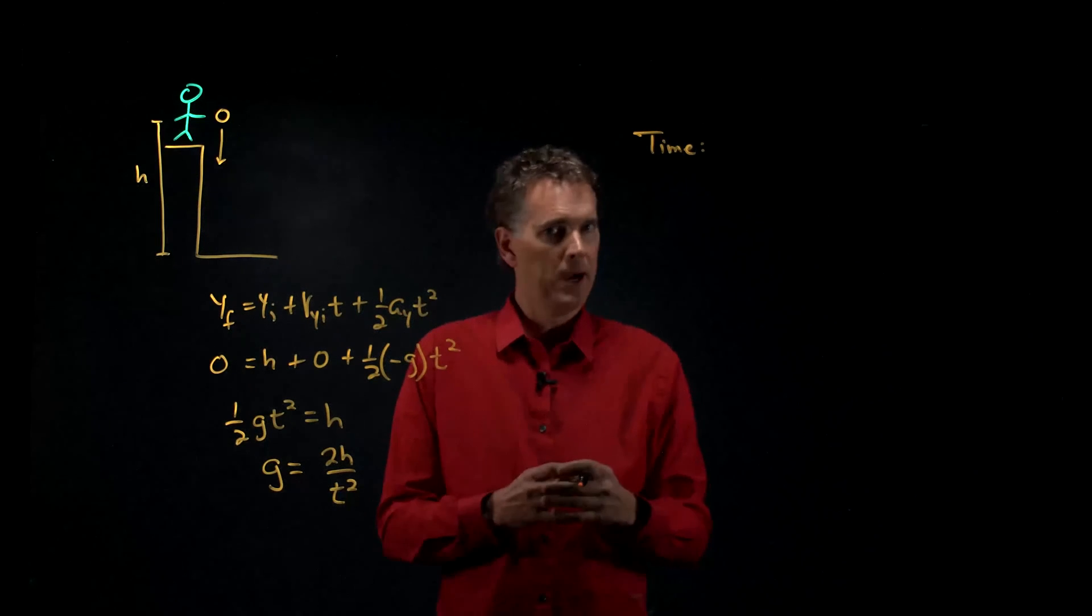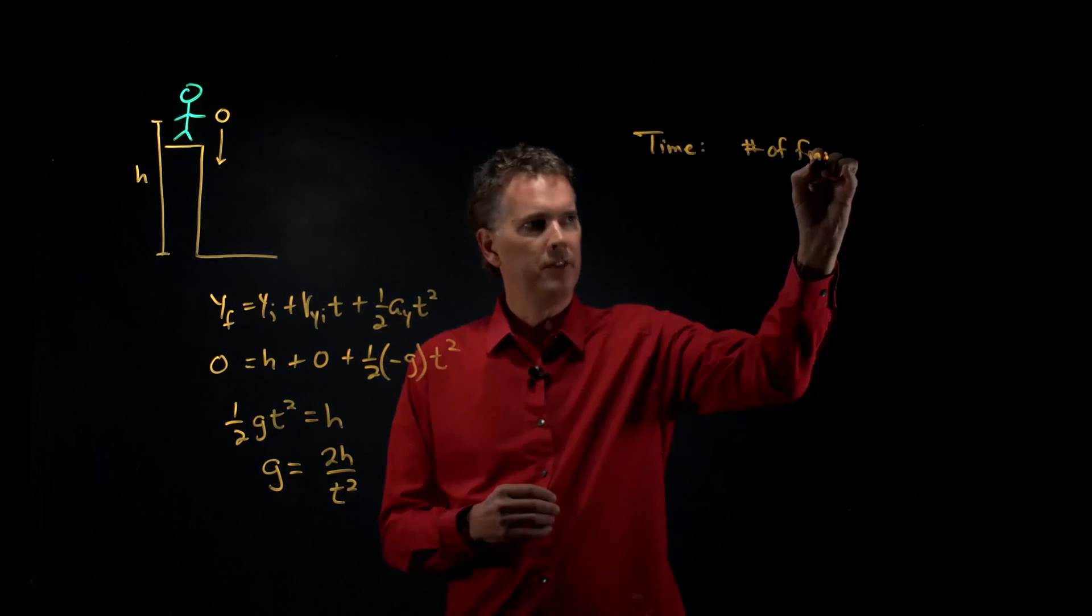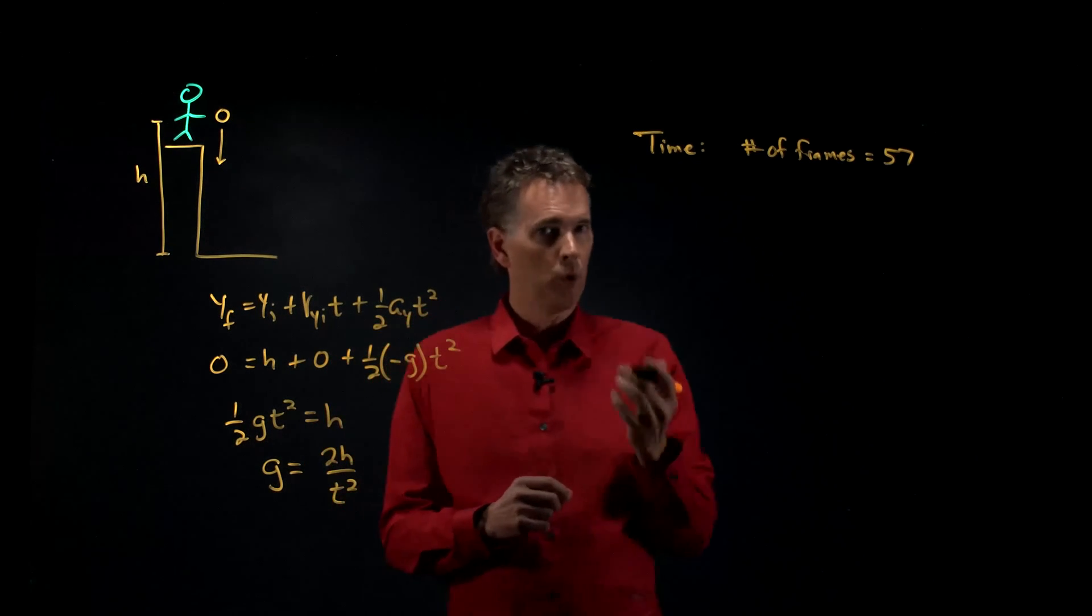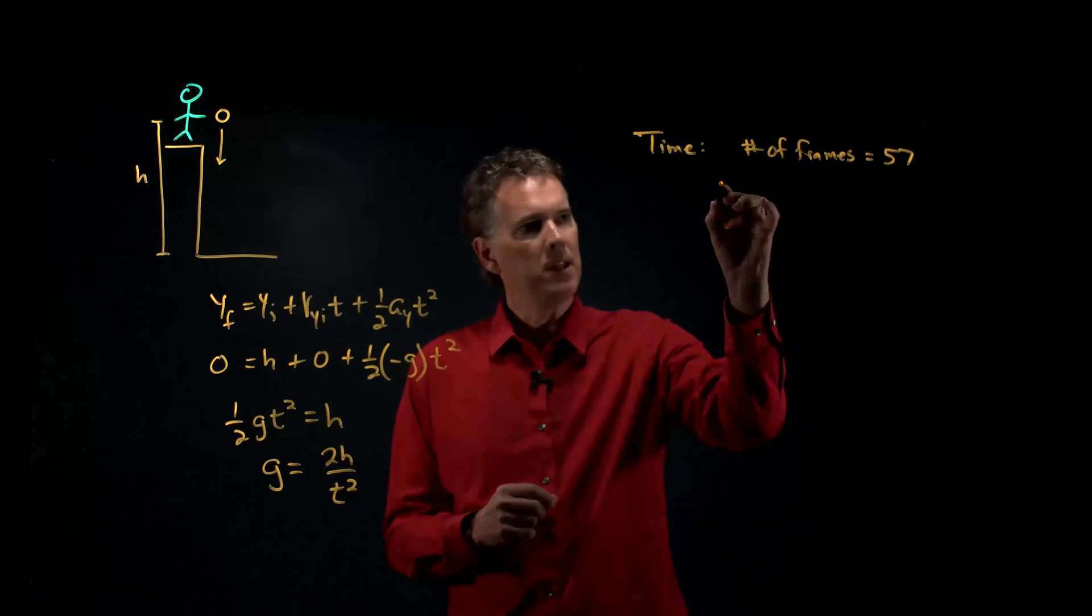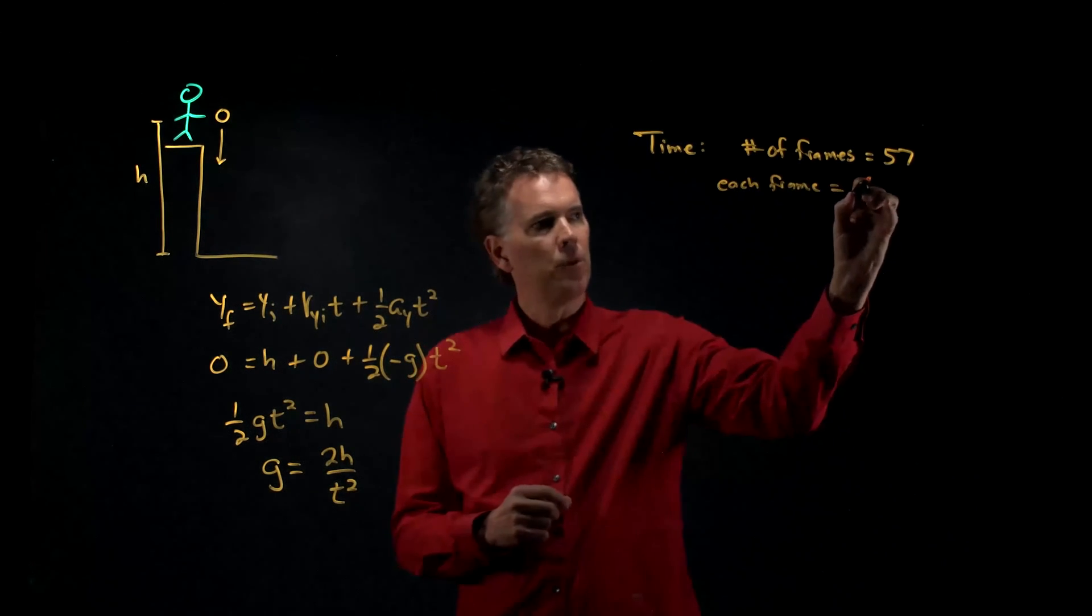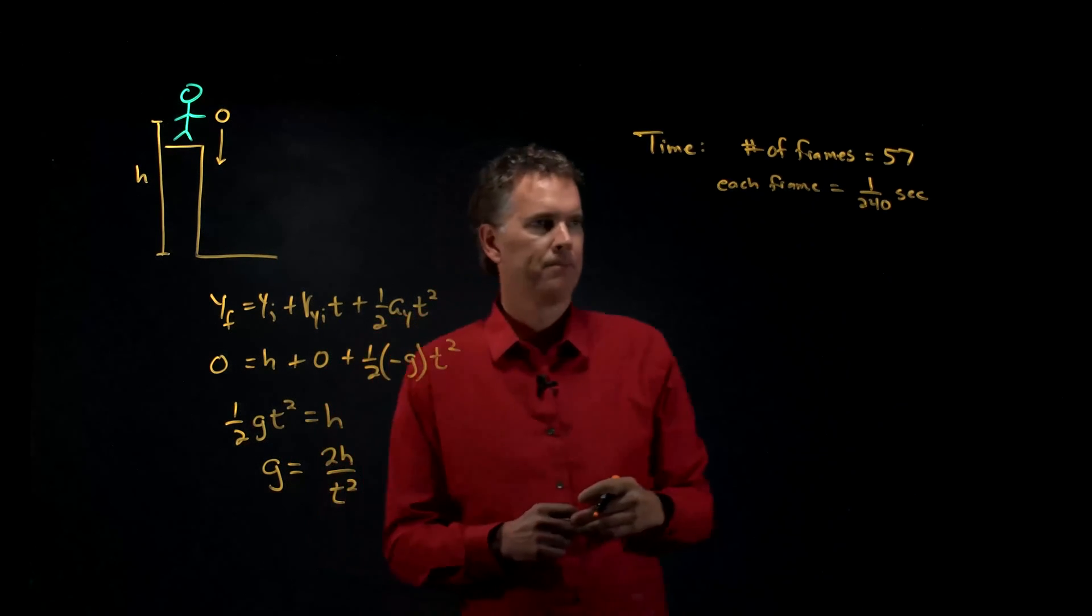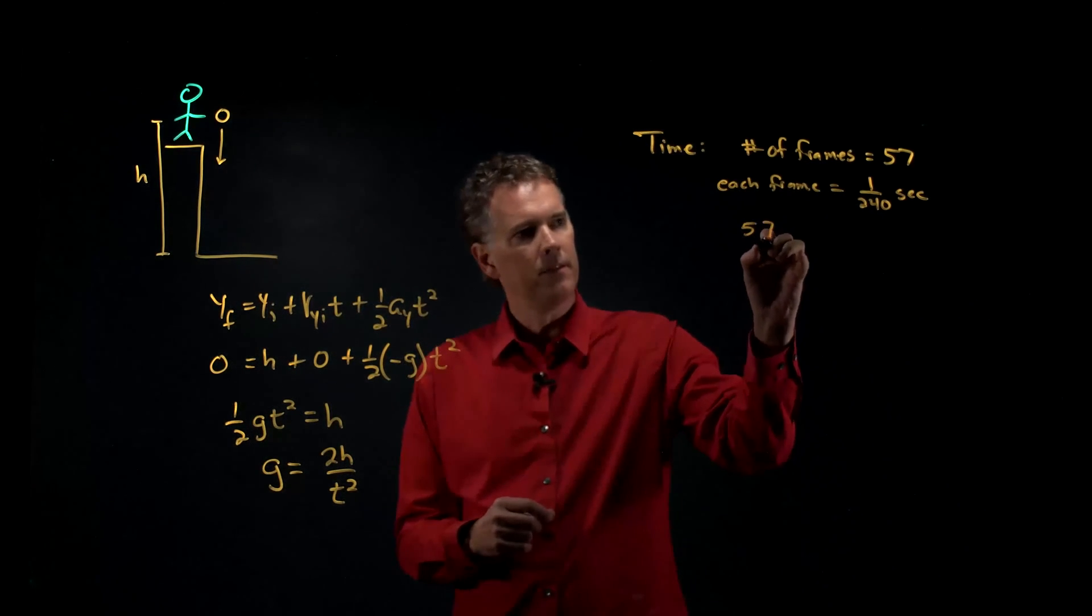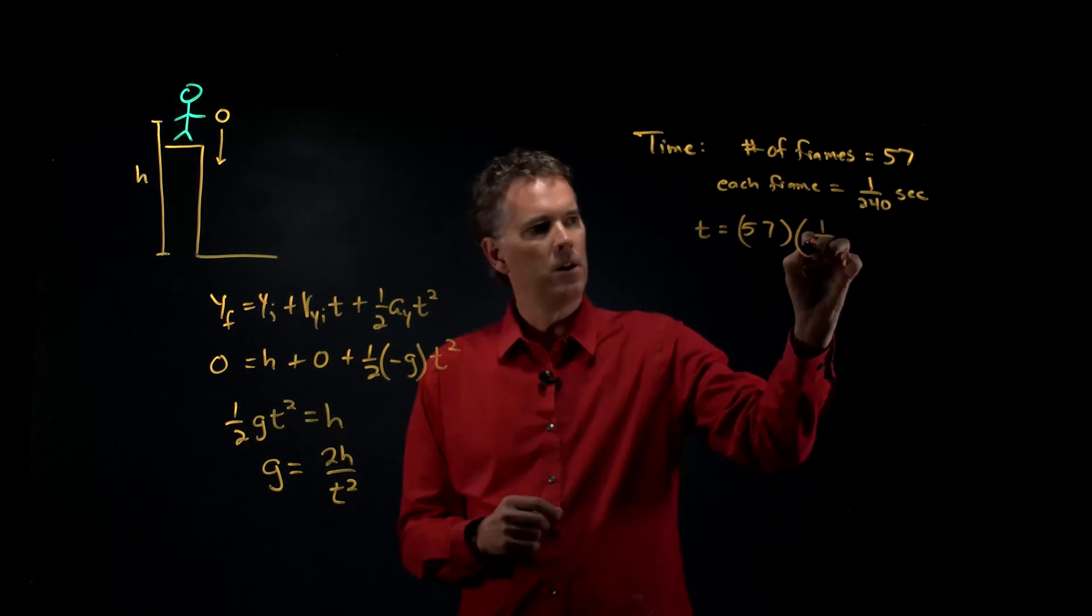So when I tried this for my experiment I got the following. The number of frames was equal to 57. And if I look at my smartphone it tells me it is recording at 240 hertz, 240 frames per second. So that means each frame is equal to 1 over 240 seconds, one 240th of a second. Okay? So this is going to allow me to calculate the time now. Right? 57 times 1 over 240.